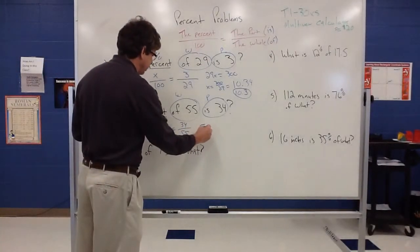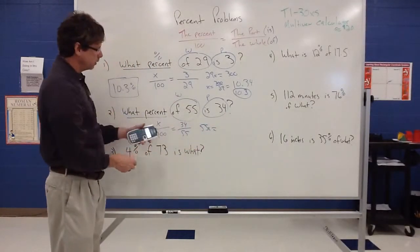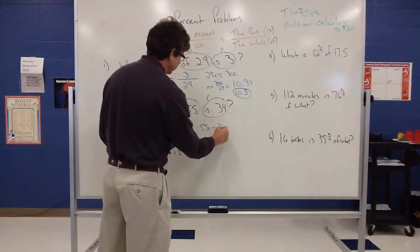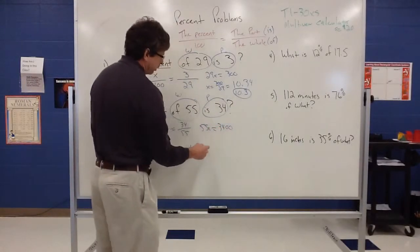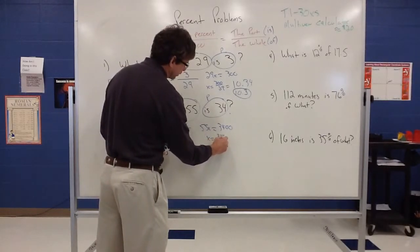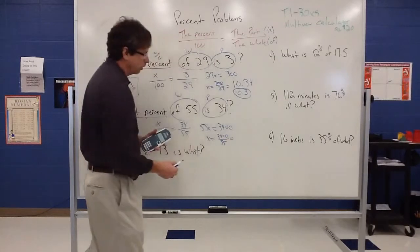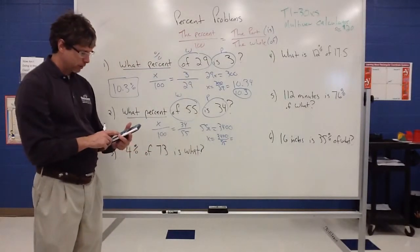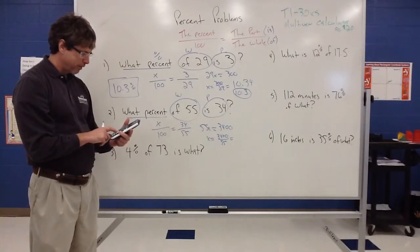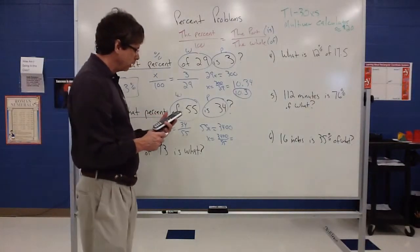So now we're ready to cross multiply. So we have 55 times X, and 34 times 100. Again, when you multiply by 100, that just means stick on two zeros, so that math is not hard. That's just 3,400. But now I've got to work backwards and divide, so X is going to equal this 3,400 divided by 55. That math, we're going to let technology figure that out for us.